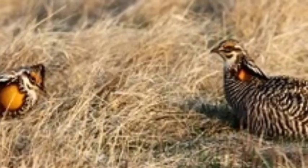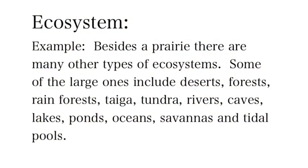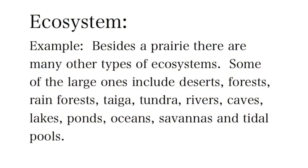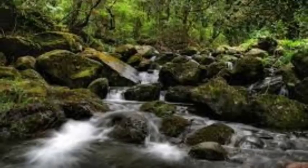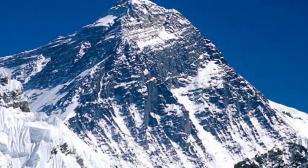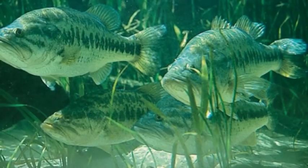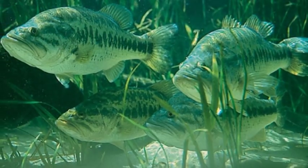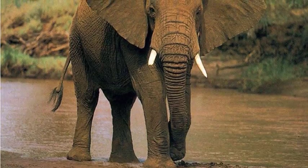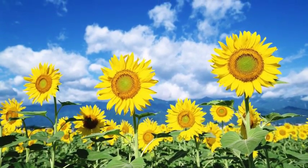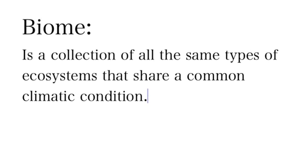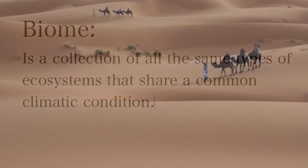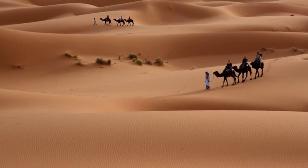Ecosystems can be really small, like a water body, or really big, like the Sahara Desert. There are lots of different kinds of ecosystems: forests, mountains, the taiga, the tundra, lakes, rivers, savannas, alpine meadows, and even the human body. The scale depends on the organisms that live there.